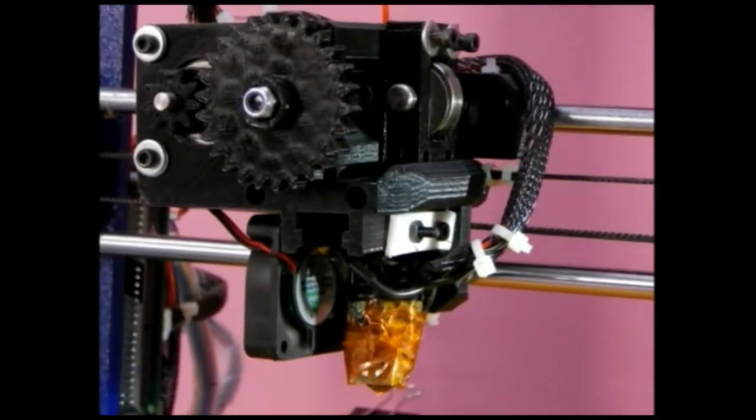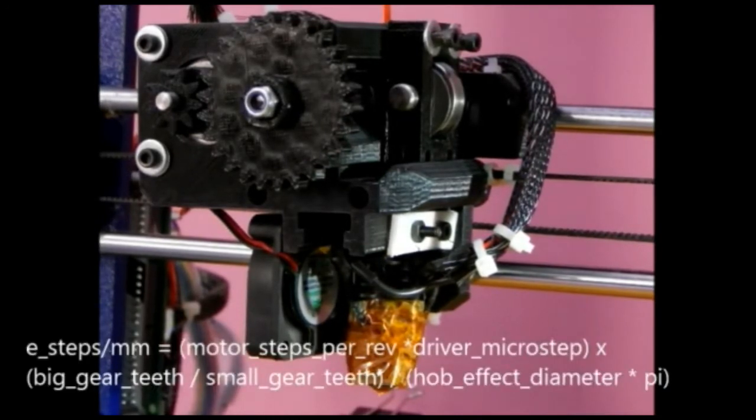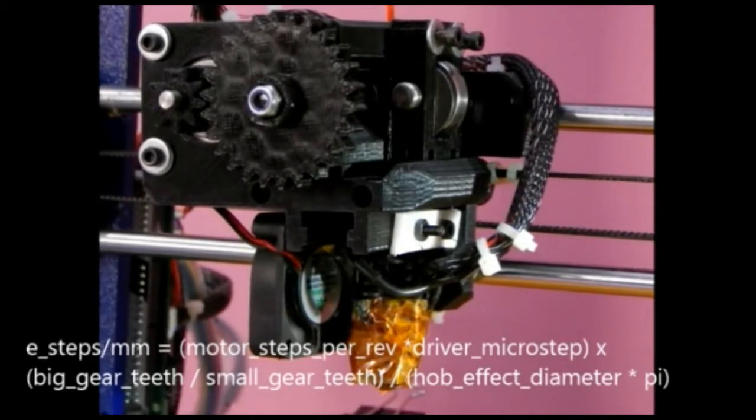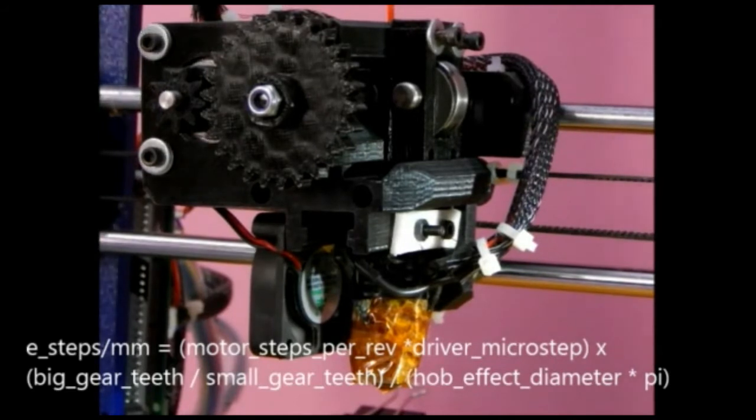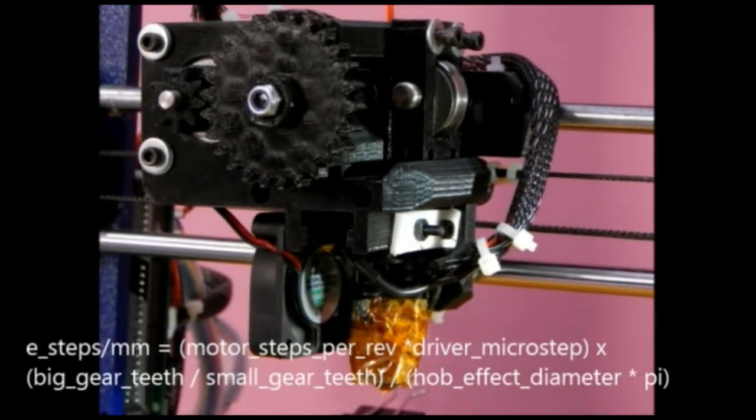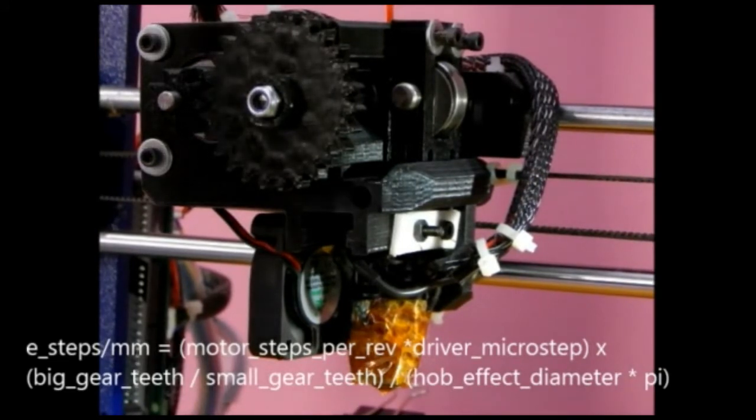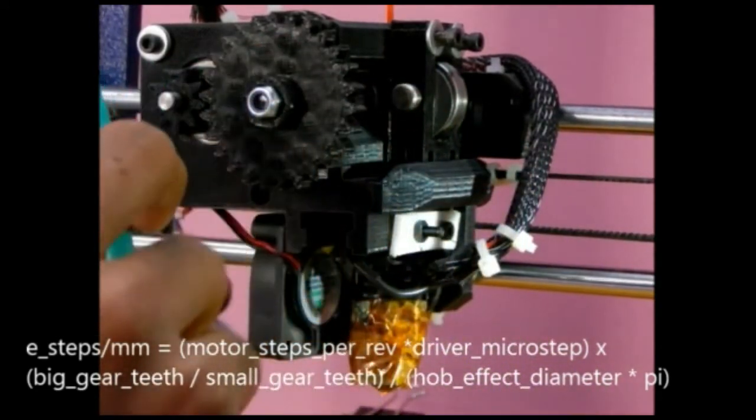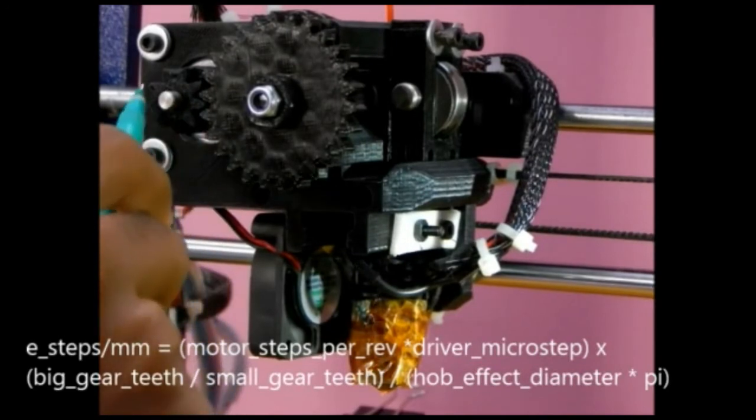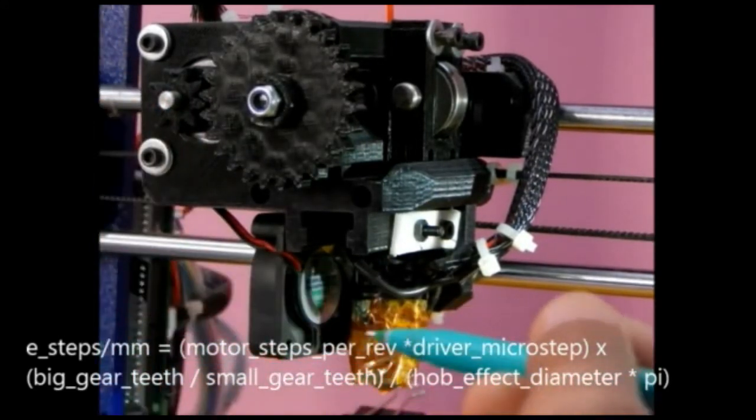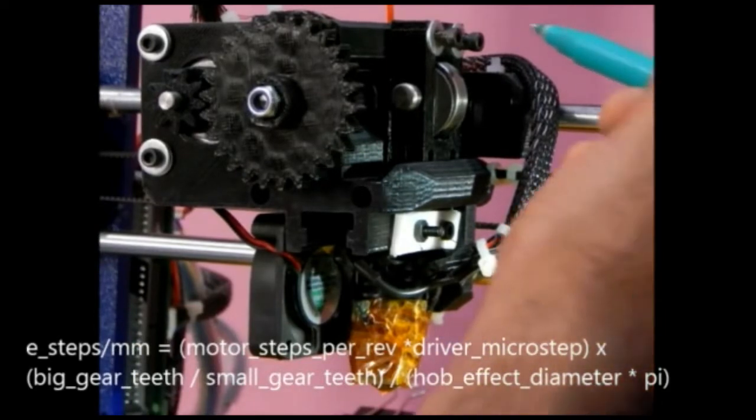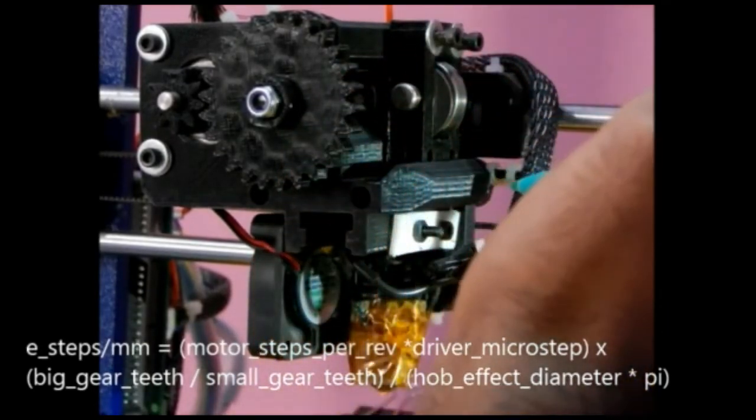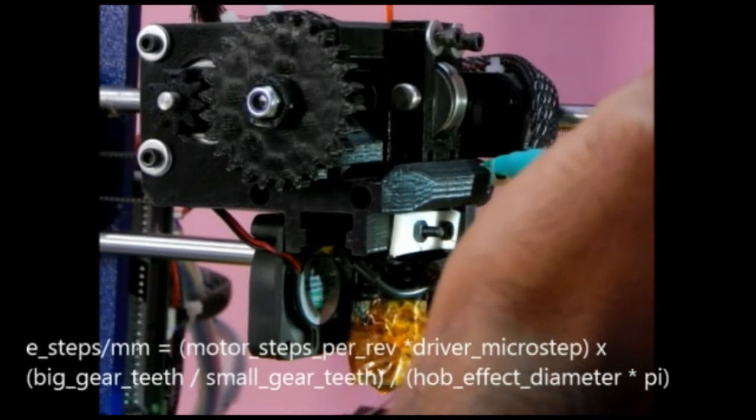Let's begin with the calibration process. The formula for calibration is E-steps per mm equals motor steps per revolution, that is 200 for this NEMA 17 motor, multiplied by driver micro-step, that is 16, and the whole thing is multiplied by big gear teeth, that is the total number of teeth in this gear. And the whole thing will be divided by hob effective diameter, that is the effective diameter of the hob bolt which comes up to 10.9, and it will be multiplied by pi, that is 3.14.